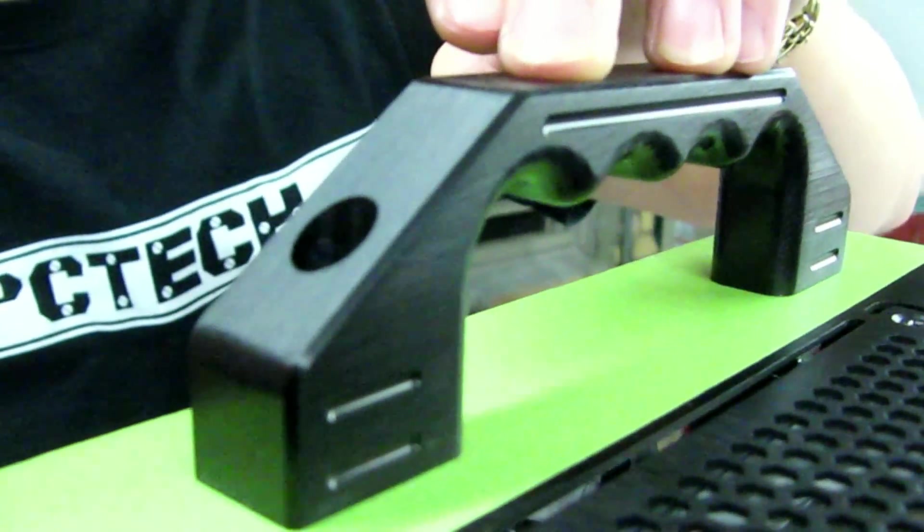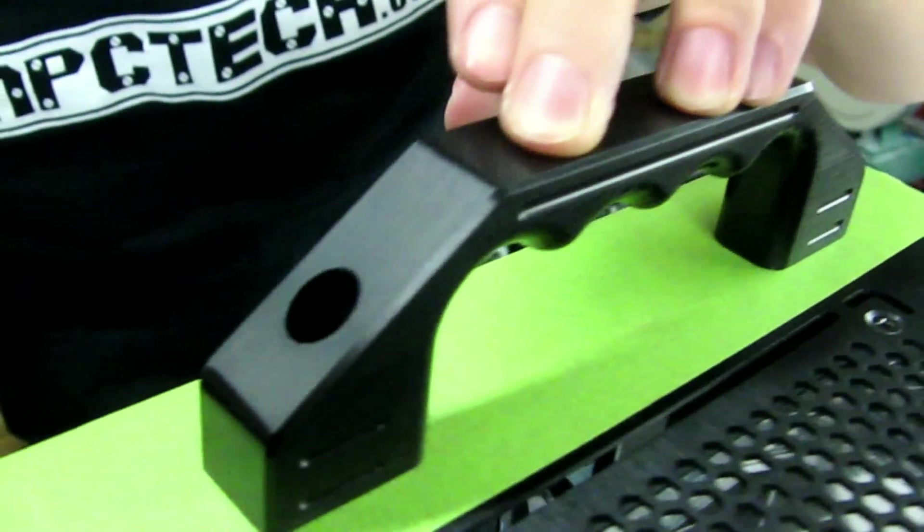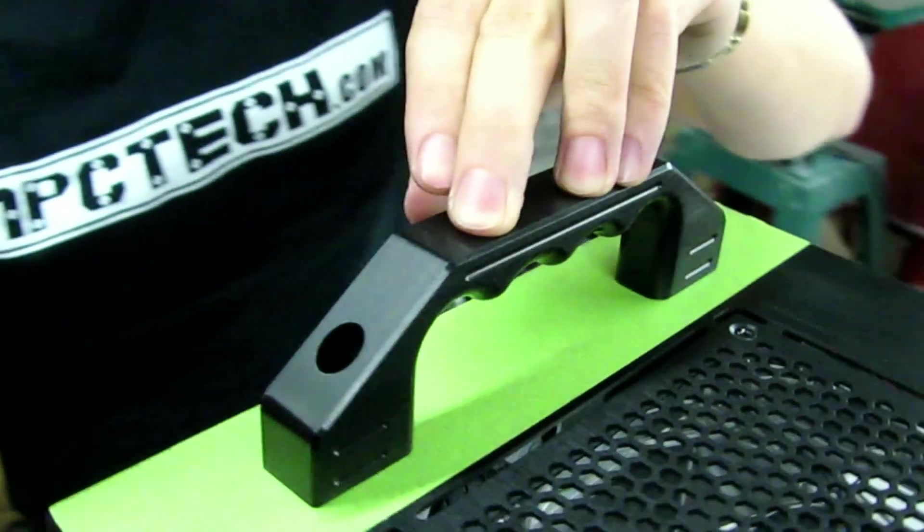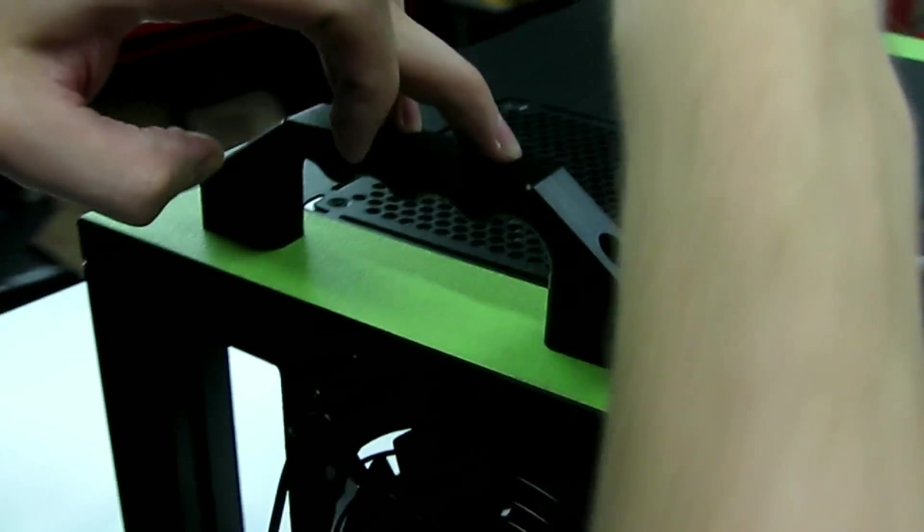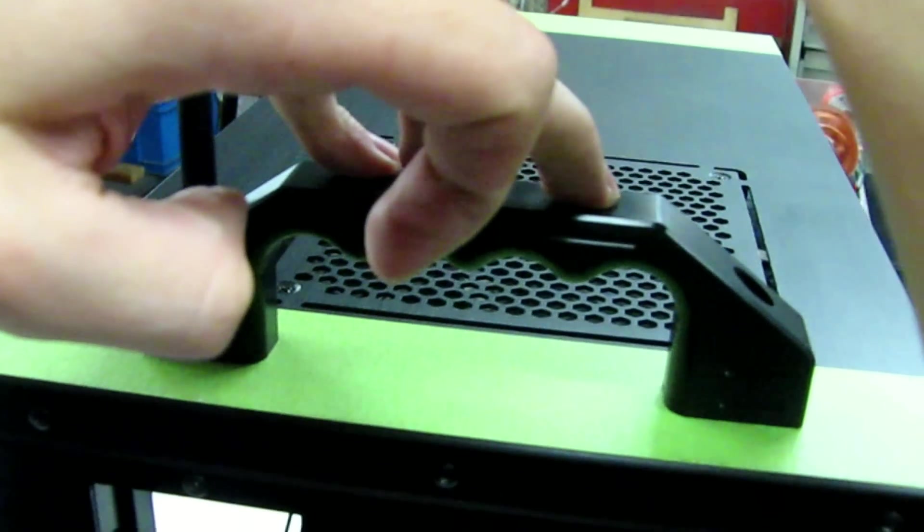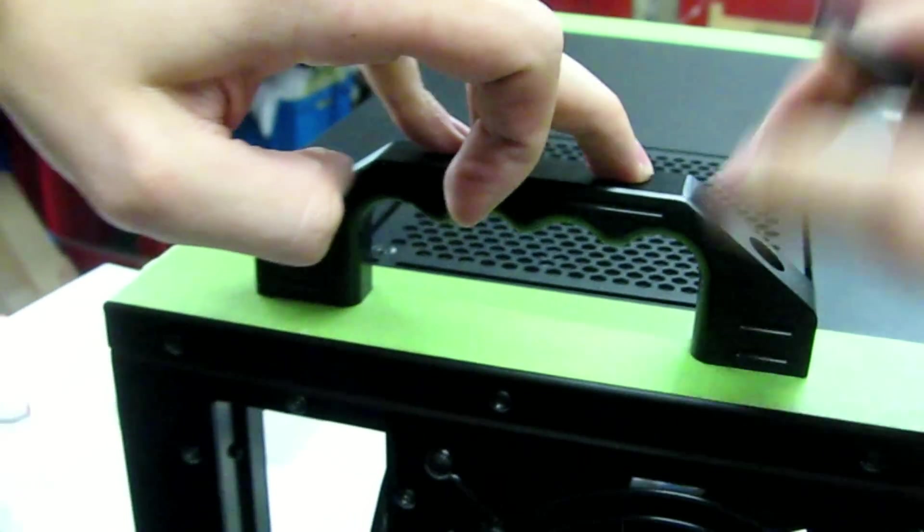Putting on the top handle is pretty easy. Just use a measuring square to find the center and then mark out holes on both sides.